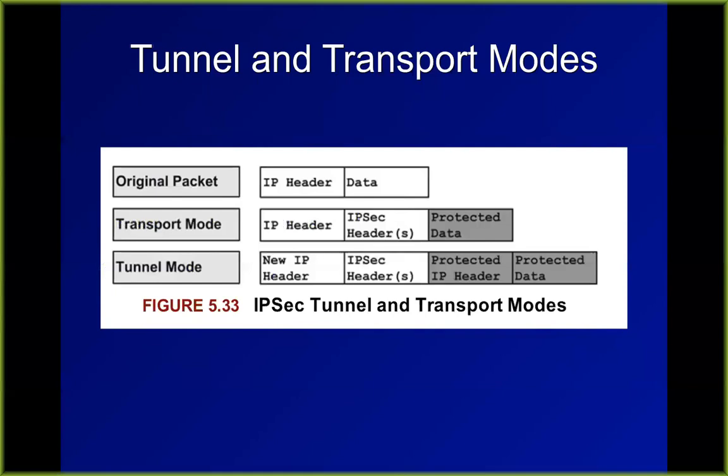In transport mode, you protect only the layer seven data. In tunnel mode, you take the entire packet and put it in another packet and encrypt the whole thing — which is a bit screwy because you still need a real unencrypted address on the outside so it can be routed, unless you're going through something like Tor, which is an anonymity network and is not part of a VPN per se, although it could in principle be combined with a VPN.